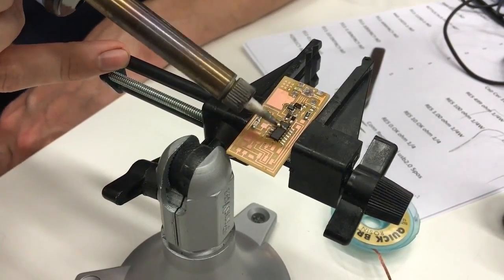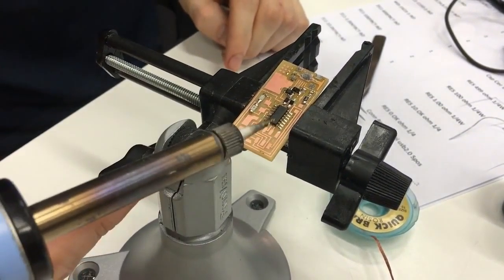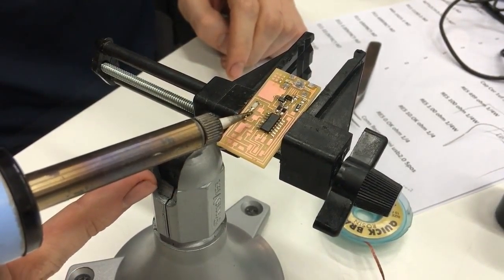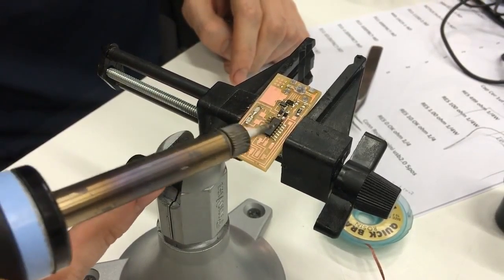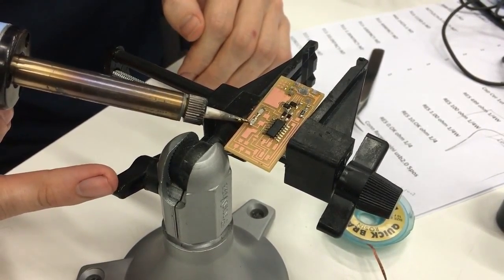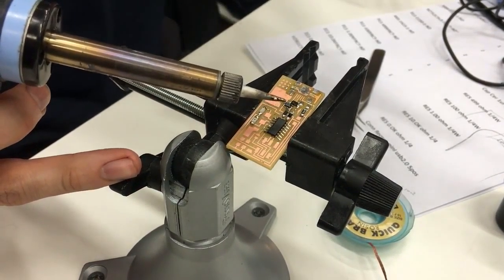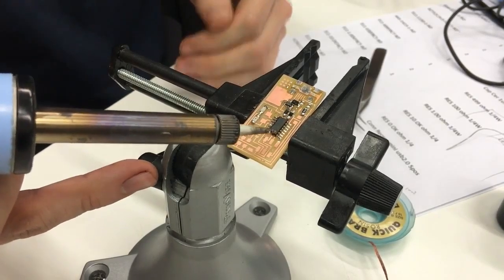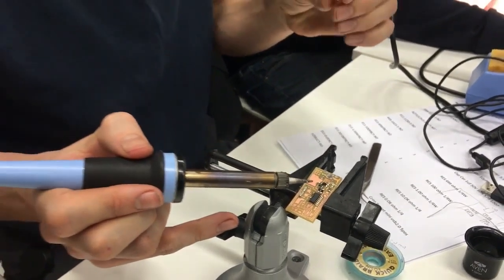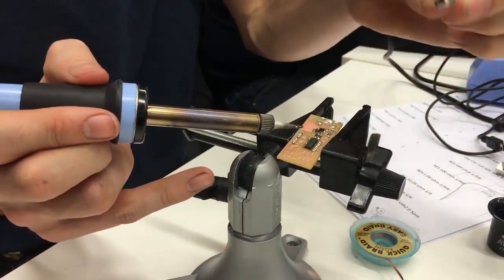You see how they sit now, the pins here on the side, so they're all individually visible and the joints are shiny and they flow from the edge of the pad, they flow nicely up to the legs, everything flows nicely. These ones still need to be fixed - you need to remove some solder from there, make sure that there's the same kind of flow.